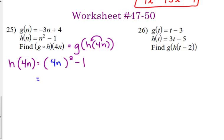Okay, we square the 4 and we square the n. So that's 16n squared minus 1.